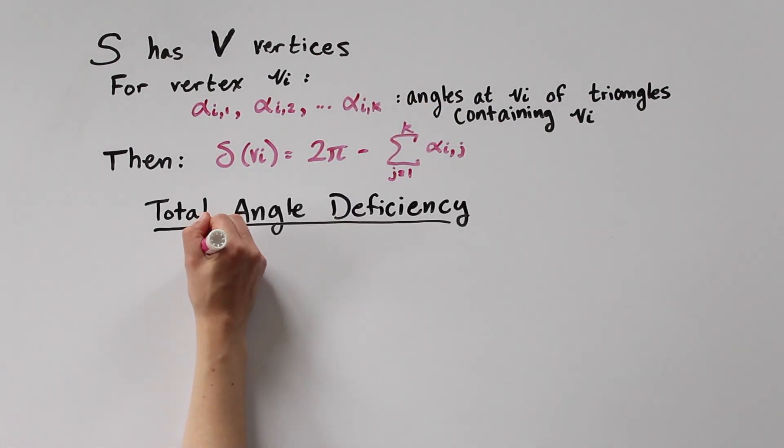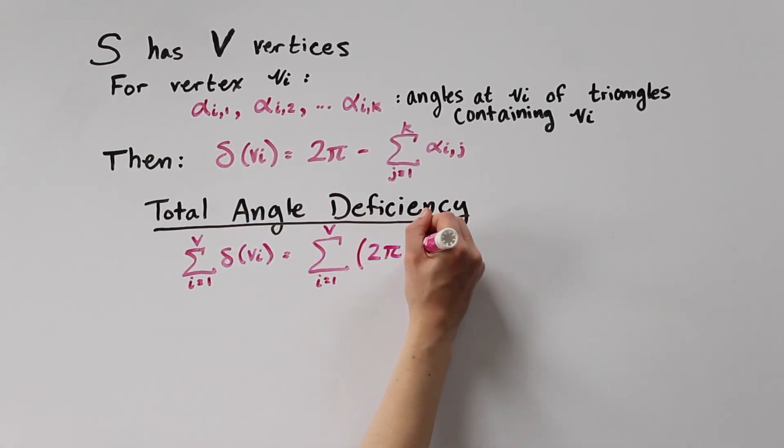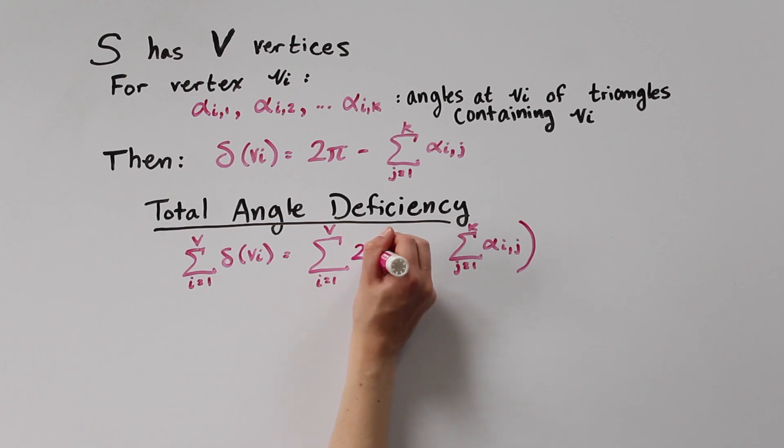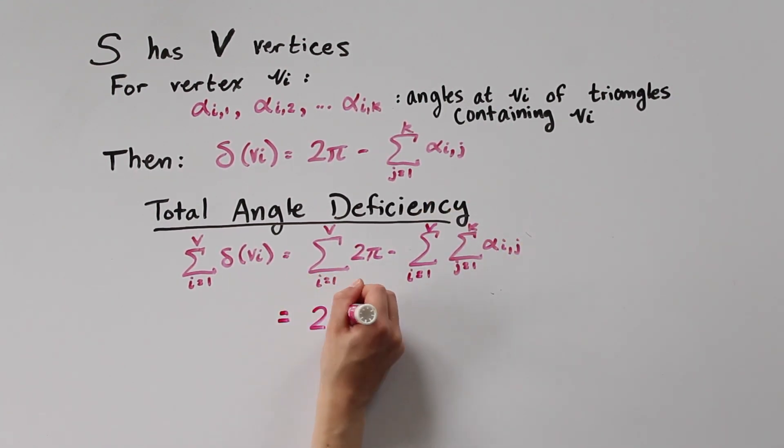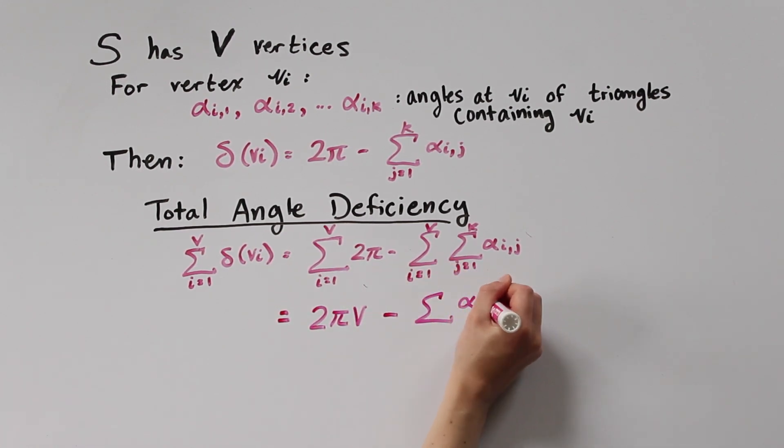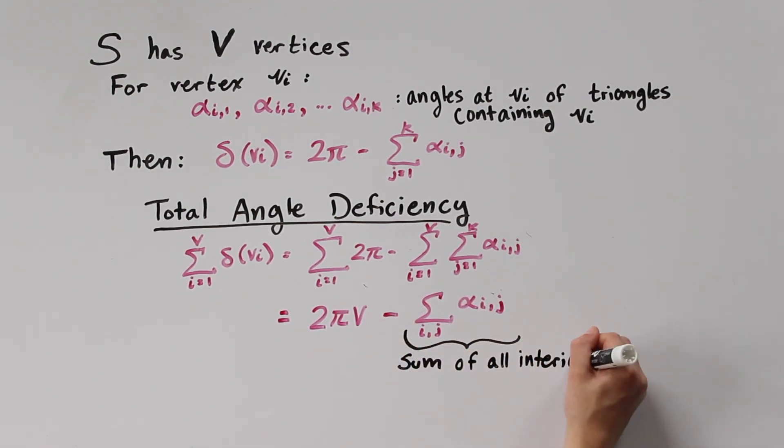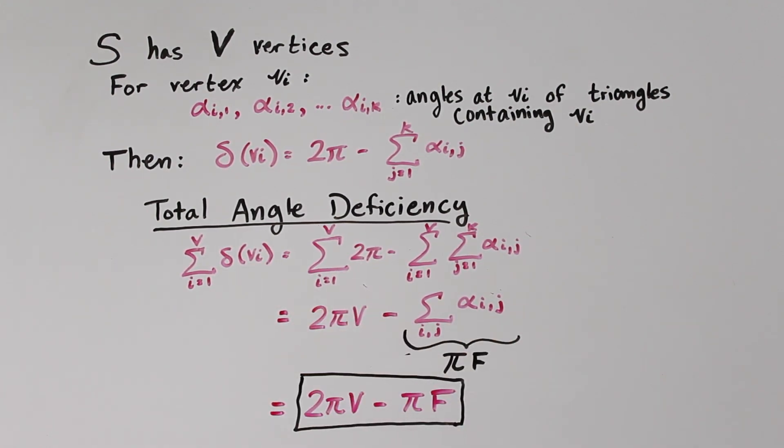Then the angle deficiency at vi is 2π minus the sum of the αij. To find the total angle deficiency, we add up δ(vi) for all vertices of the surface. This gives 2π times v minus the sum of all of the αij. This sum is exactly the sum of the interior angles of the triangles in the subdivision of S. And we already found that this sum is π times F. Hence, the total angle deficiency of S is 2π times v minus π times F.